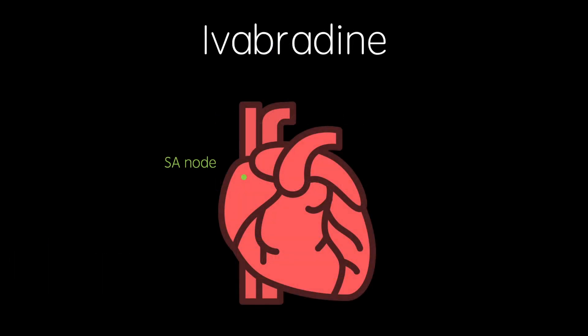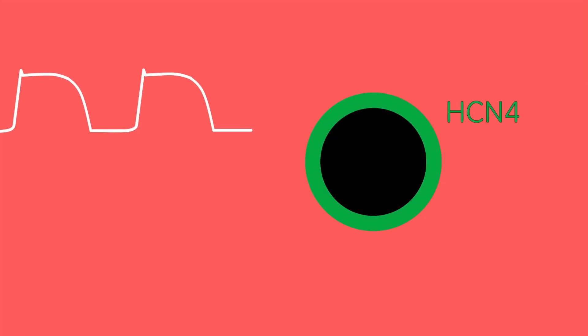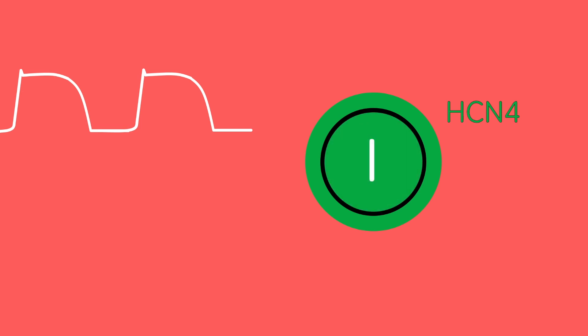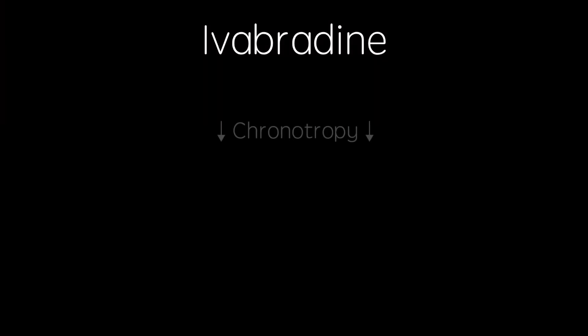Ivabradine exerts its effects by slowing the rate of the sinoatrial node by blocking the so-called funny current. This current is mediated by the non-selective cation channel HCN4, which is responsible for generating cardiac depolarisation. Therefore, this selective antagonism reduces chronotropy, which extends the time during which blood is able to perfuse the heart, which in turn reduces oxygen demand.